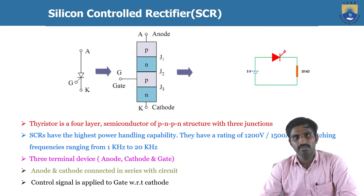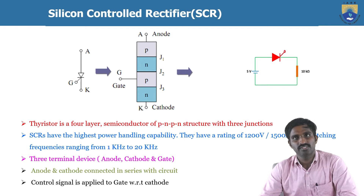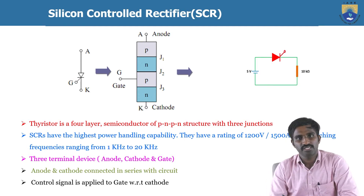As you already know the different types of semiconductor devices we discussed in the previous class. The basic semiconductor device, the power diode, we have already learned. Now we are going to discuss about the SCR, which is also called as a thyristor. The SCR is the silicon controlled rectifier, and basically this is a four-layer device with three junctions, as represented in the internal structure of the SCR.